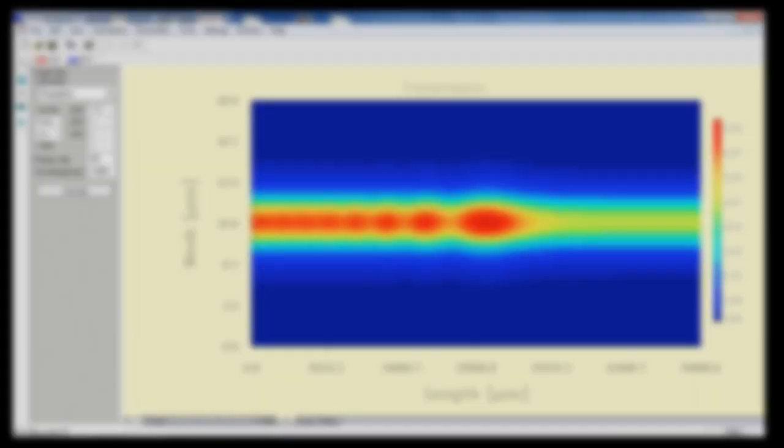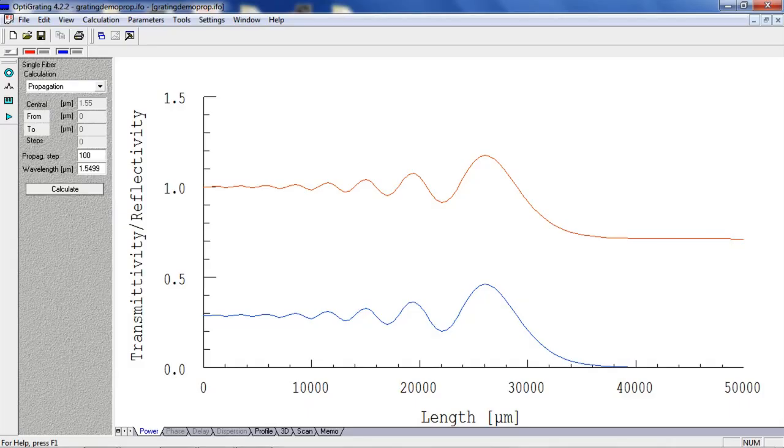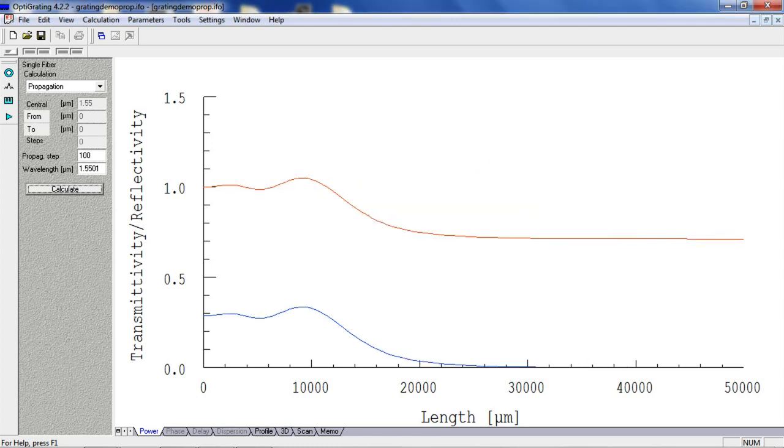OptiGrading can simulate the propagation of light at any wavelength. At the longer wavelength, for example, if we adjust the wavelength to 1.5501 and simulate it by clicking Calculate, we will see that the light does not propagate far into the grating and is mostly turned around at the beginning.